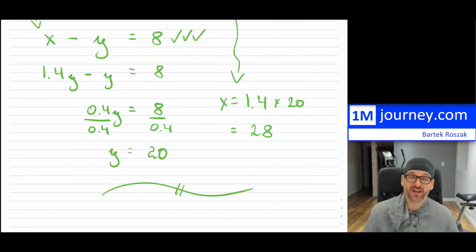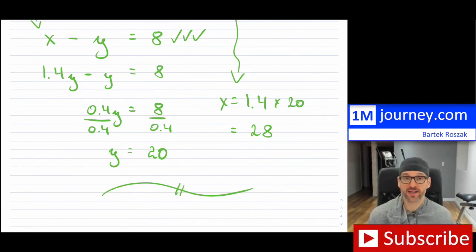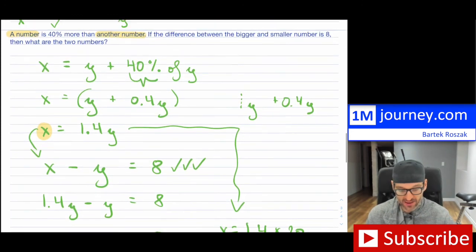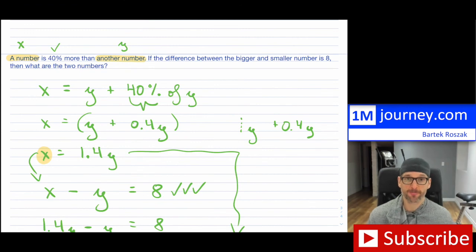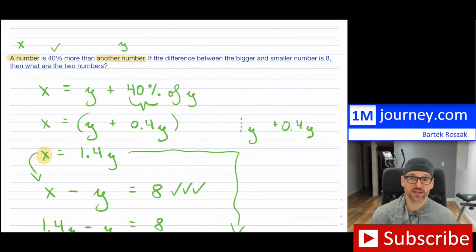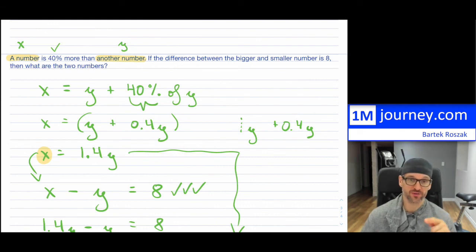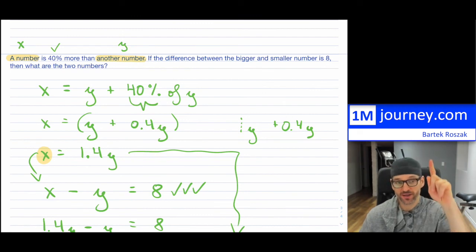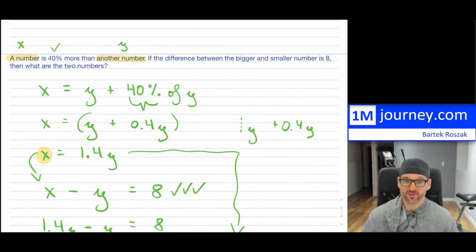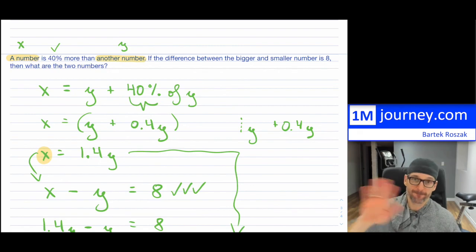Those are three problems — similar in that they use 'more than' and 'less than,' but with variety so you can see how to set them up as equations. This is part one of word problems with linear systems using two equations and two unknowns, solved with substitution. I'll put a playlist link above linking all these videos together. See you in the next video — bye everybody!